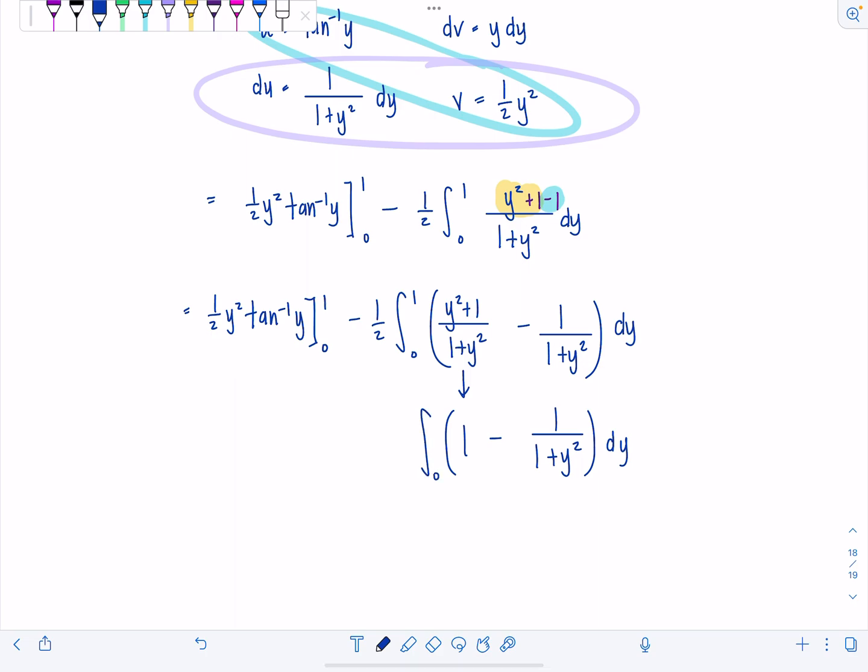Minus 1 over 1 plus y squared dy. Are we happy with that? I hope you are. We can anti-differentiate 1. That's no big deal.